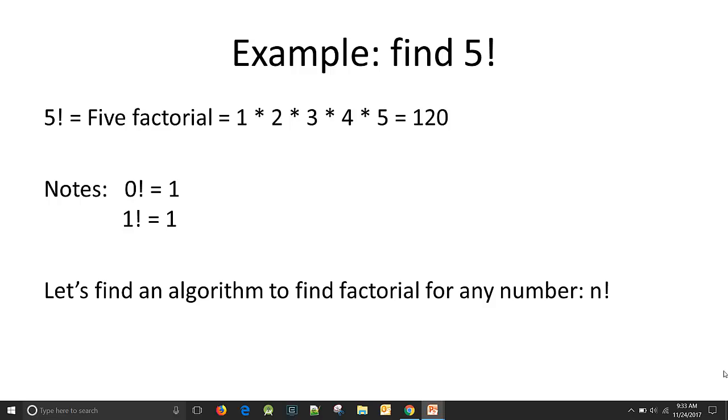Don't worry if you don't know what factorial is. I'm going to explain it right now. So it's written as 5 exclamation point. That's factorial. And what factorial is, is that number 5 times every number smaller than it. So 5 times 4 times 3 times 2 times 1. You just multiply all those numbers together. And as you multiply it all out, you get 120.